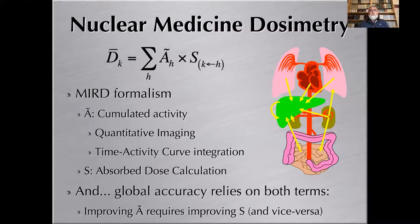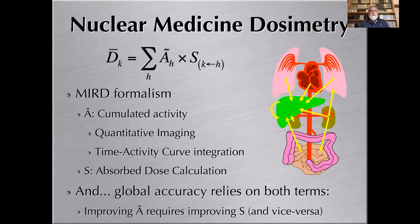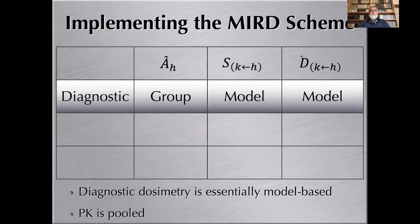Nuclear medicine dosimetry, as was already presented in the first lecture, is summing the contribution to a given target from the various sources. According to the MIRD formalism given by the equation here, you first have to get accumulated activity, which is the total number of decays in a source. That can be obtained by implementing quantitative imaging and time activity curve integration, which are two independent steps, and then S-values that absorb those calculations itself. The global accuracy requires improvement on both terms.